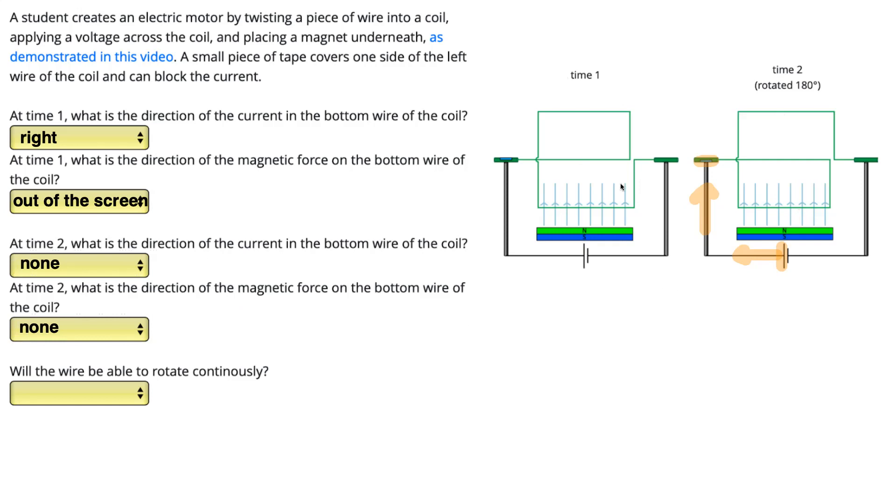At time one, it's being pushed out of the screen towards you as it spins up. Once it's rotated 180 degrees, there's no force acting, but it's already moving, so the momentum of the coil keeps it spinning until it gets back around to the time one location again, where it can be pushed again in the same direction out of the screen towards you.